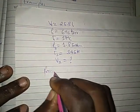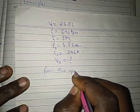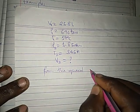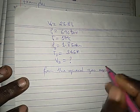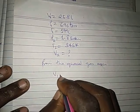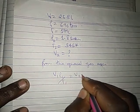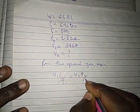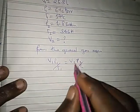From the general gas equation, according to the data given here, the general gas equation states: V1 times P1 divided by T1 is equal to V2 times P2 divided by T2. What is required is V2.